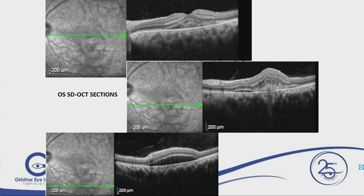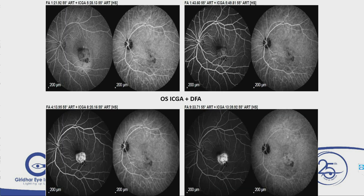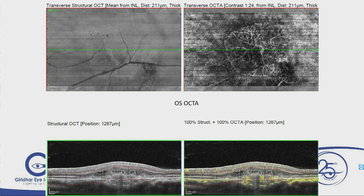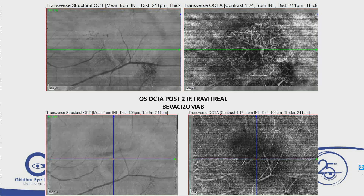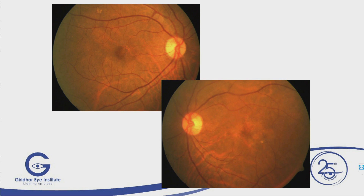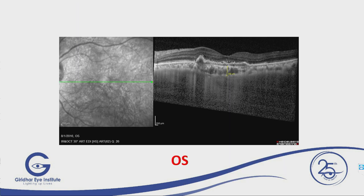OCTA is showing a nice neovascular network. Post-treatment, you have to follow up section by section and modify your treatment — don't just look at one section. OCTA shows regression of the network after two or three injections. Both OCT and OCTA are very useful in follow-up of AMD.